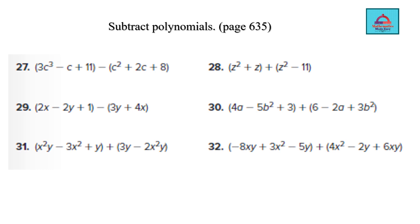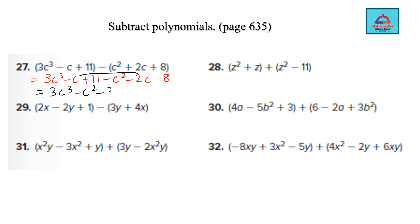Some more questions with the same learning objective from the same page. We are going to do: 3c cubed minus c plus 11. The only difference is you have more terms, so just change the sign of all of these — all positives become negative. Now combine the like terms: 3c cubed has no like term, minus c squared has no like term, minus c and minus 2c give you minus 3c, and 11 and 8 give you 3. Remember to always write your final answer in standard form of a polynomial — decreasing the power one by one.